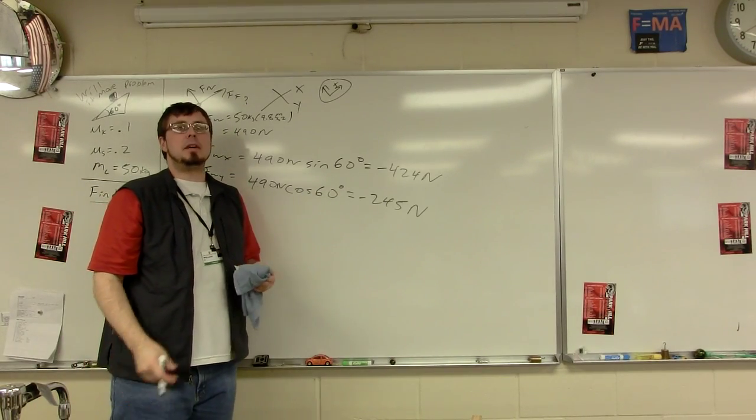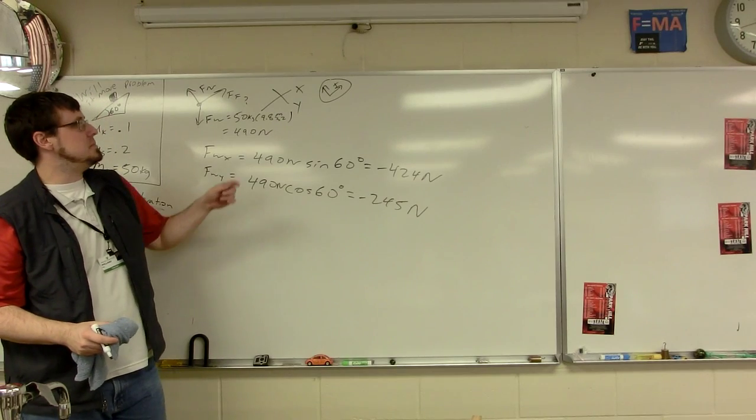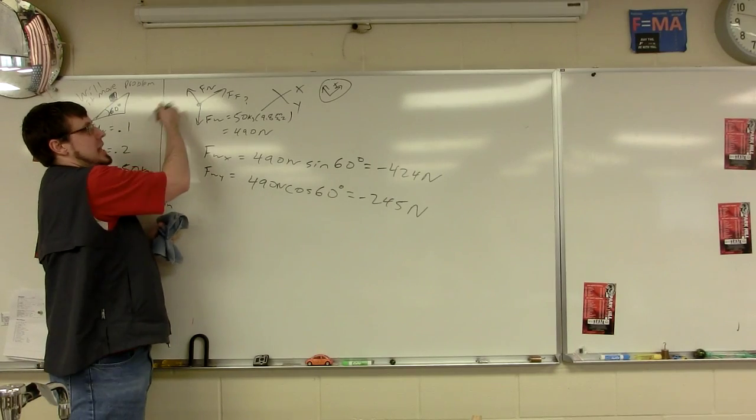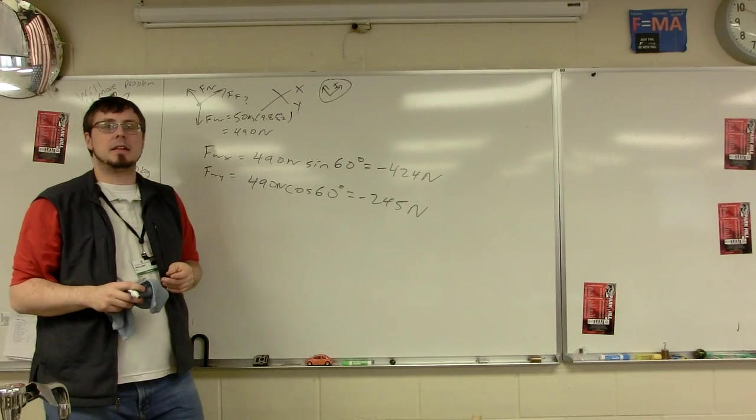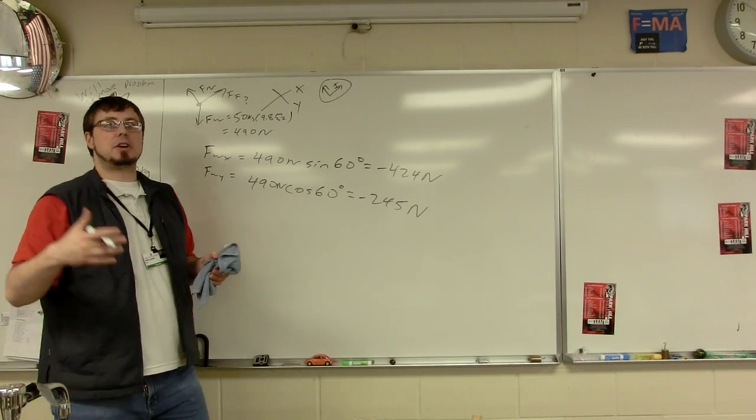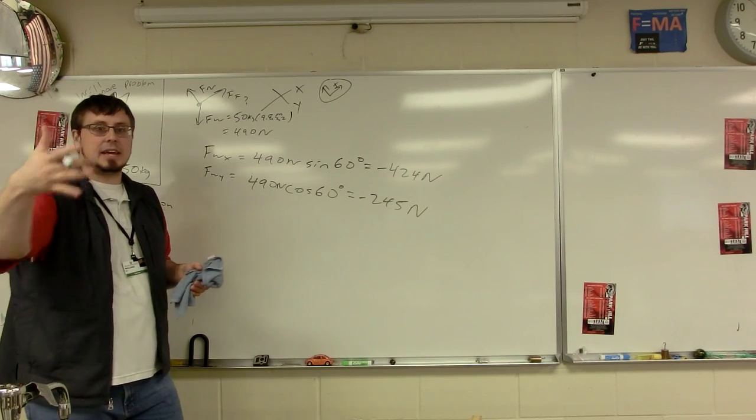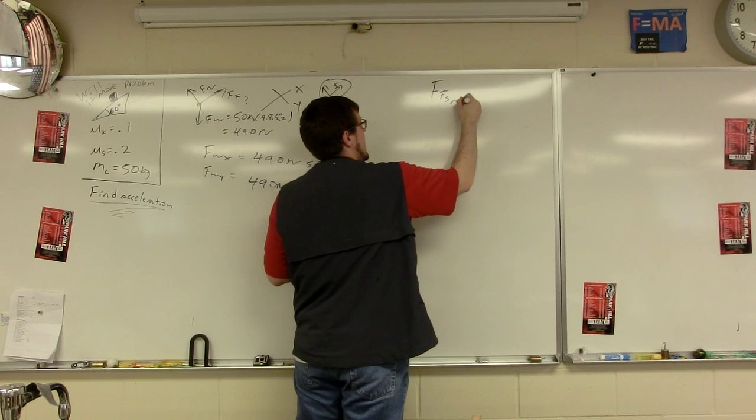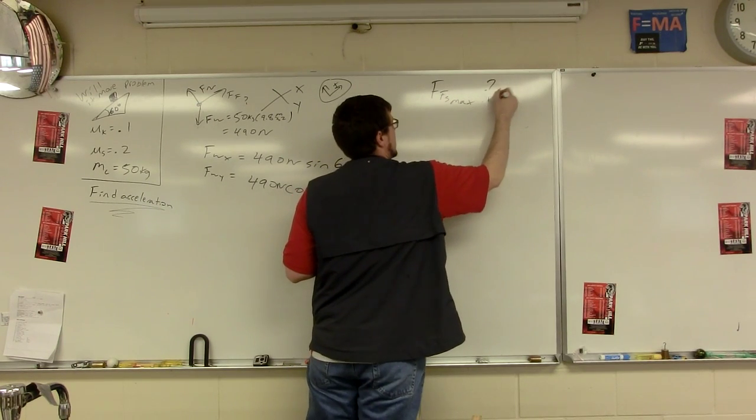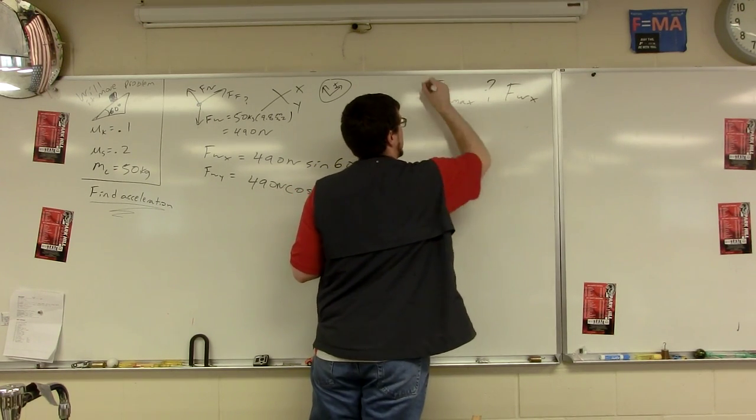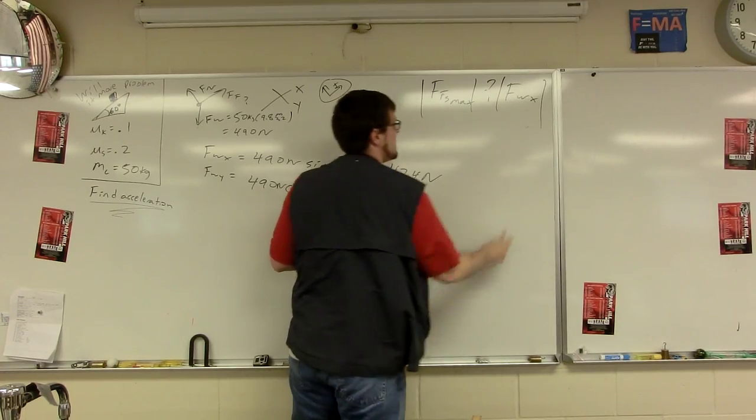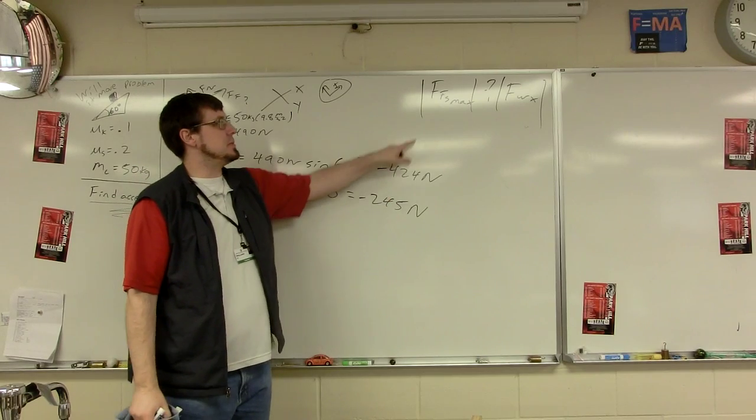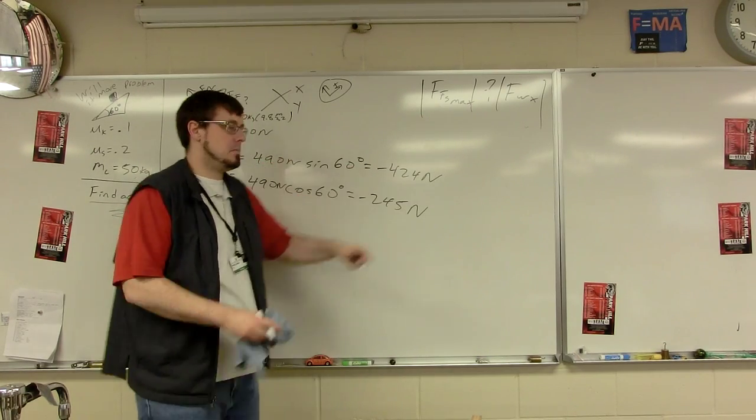Now we have to do a comparison. Well, if we're going to get this object to move, we're going to have to compare weight in the x to what? Because weight in the x is what's trying to get it to go down. What's trying to keep it from moving down the incline? Friction. Forces of friction, more specific. Static max. So we're going to do a comparison between force of friction static max and the weight in the x direction. The absolute values, because I'm just talking about the size of those two forces. And we have weight in the x, but do we have static max yet? Nope.